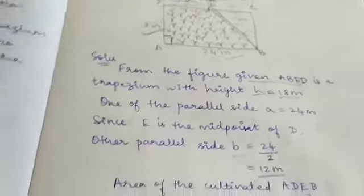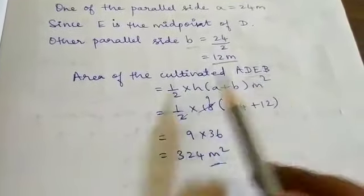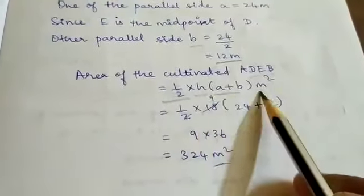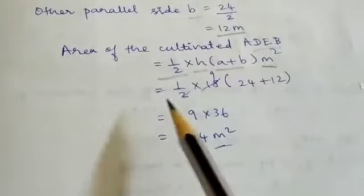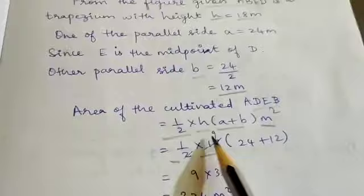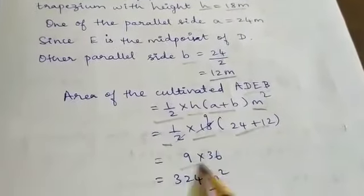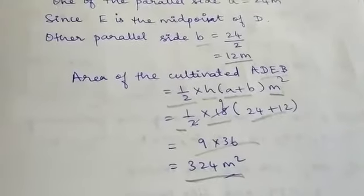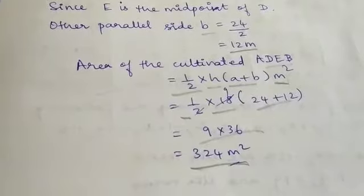Area of the cultivated area ADEB equals half into h into (a plus b) meter square. So half into 18 into (24 plus 12), which is 9 into 36, which equals 324 meter square. That is the second lesson complete.